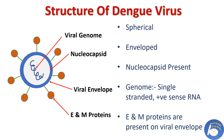Regarding the structure of dengue virus: it is a spherical virus with a diameter of around 50 nanometers. It is an enveloped virus with a nucleocapsid present around the genome. Its genome is single-stranded, positive-sense RNA, which means it can be directly translated into proteins. It has E and M proteins present on the envelope, which allow entry of the virus into human cells.